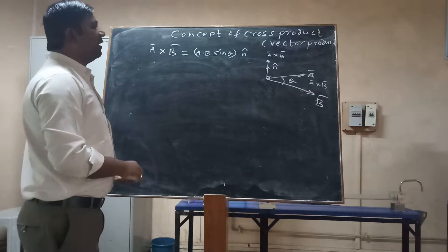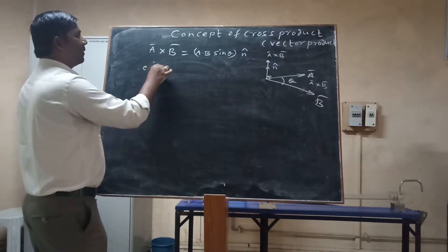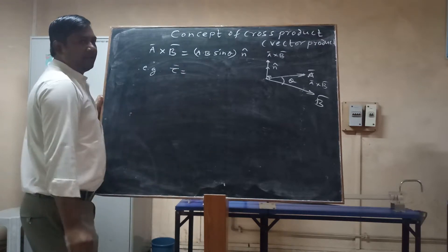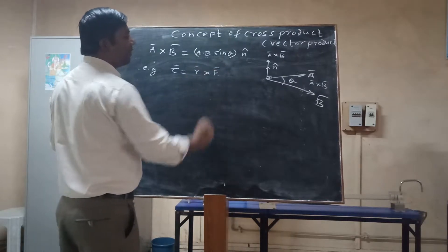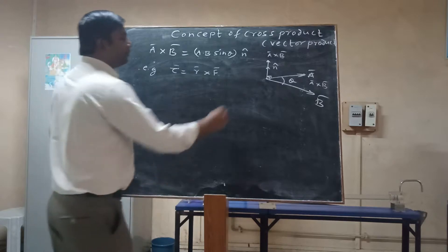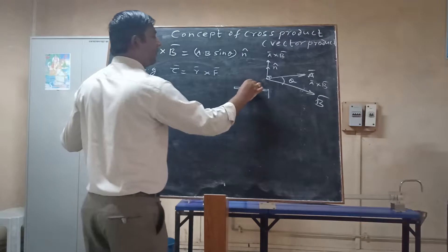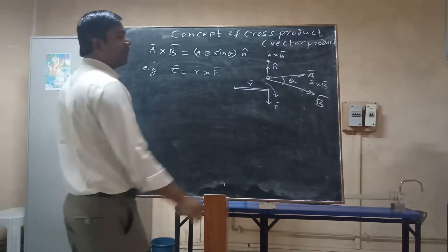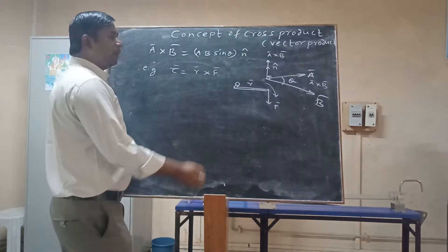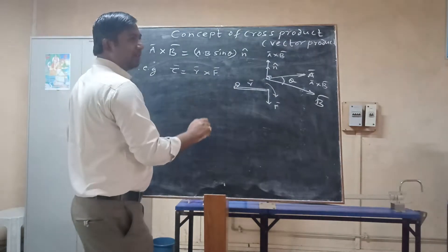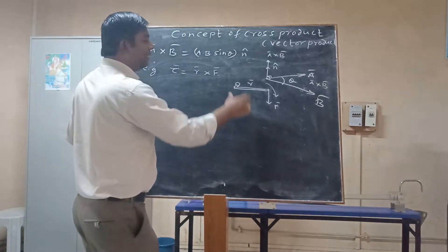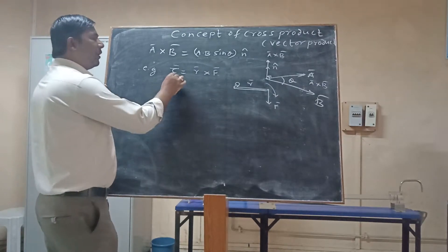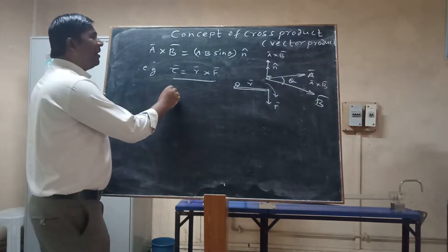An important example of cross product is torque, denoted by τ. Its formula is τ = r̅ × F̅. When you apply force on a lever, it produces a rotation — that is torque. This principle is used in taking out nuts and bolts from mechanical systems, and also in pulley systems. Torque, or moment of force, is one of the best examples of cross product.